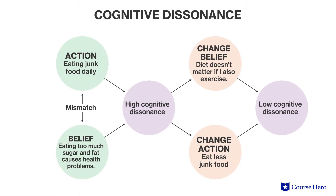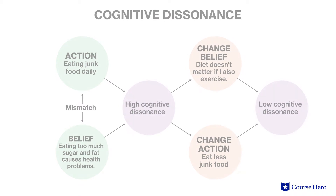These attitudinal inconsistencies are uncomfortable, and so people are motivated to decrease them. Since we can't always change our behaviors — the actions in question may have already happened — we wind up changing our attitudes or beliefs instead. Related to cognitive dissonance is impression management theory, which argues that people will lie about their attitudes to appear as though their actions are consistent with their beliefs.